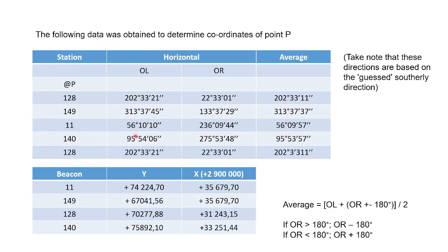First of all, these are the readings you took. You took your circle lefts and your circle rights for horizontal, and you must work out the averages of these. These are based on a guessed southerly direction. Your calculations will correct your readings no matter if they're quite off. Hopefully you've done it quite accurately, which makes calculations a bit easier. You take these readings based on what you guessed the southerly direction.